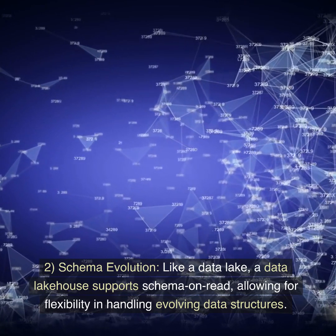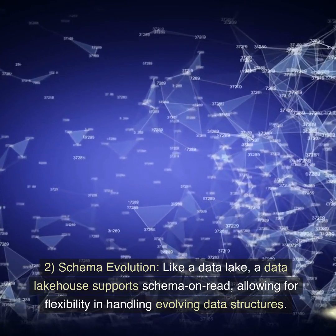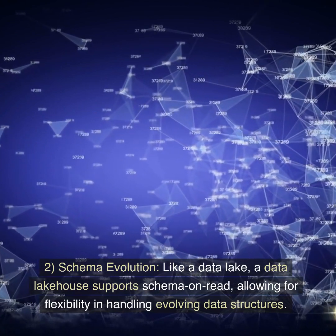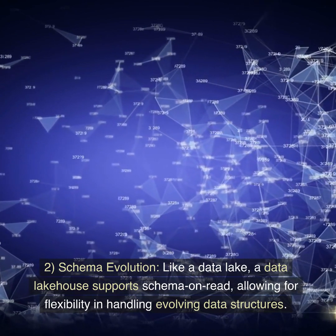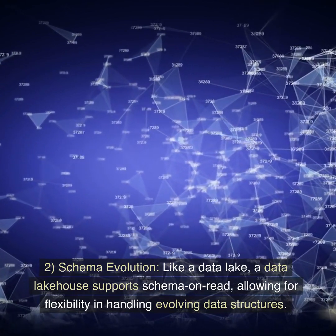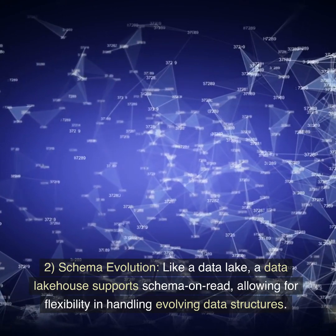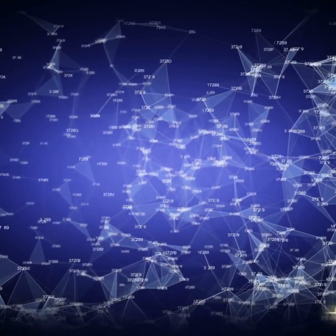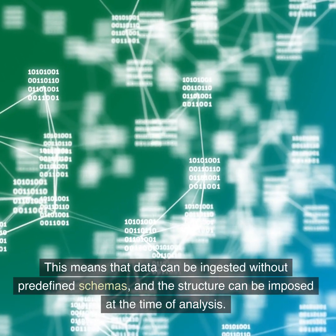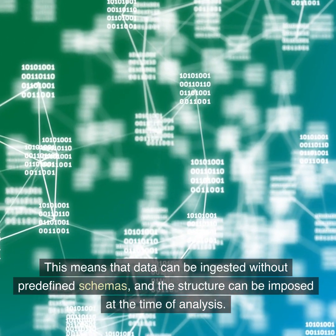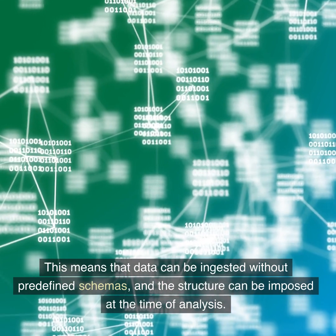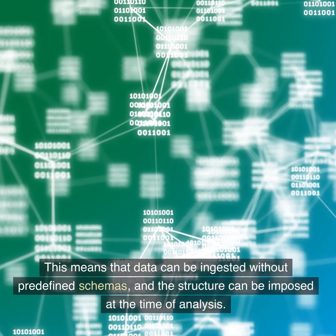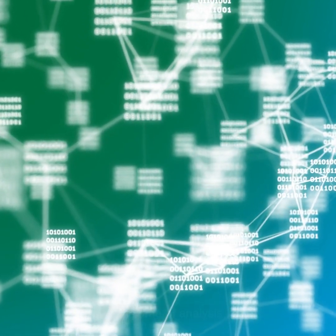2. Schema evolution. Like a data lake, a data lake house supports schema on read, allowing for flexibility in handling evolving data structures. This means that data can be ingested without predefined schemas, and the structure can be imposed at the time of analysis.